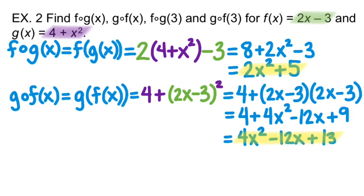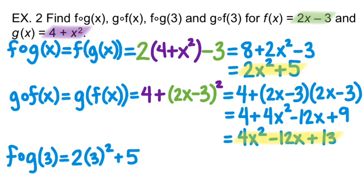So now that I've found the functions F of G and G of F, I can do the last two parts of this problem by substituting a 3 in for X in both of those equations. So I'm going to substitute a 3 into the F of G function. So that would be 2 times 3 squared plus 5, which equals 23.